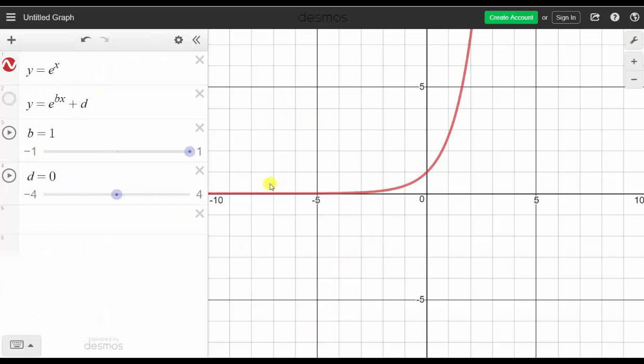In red, we have the graph of y = e^x, and now we will graph y = e^(bx) + d, where when b is one and d is zero, we have the graph of the same exponential function, which we now see in blue.